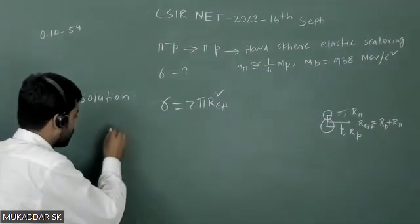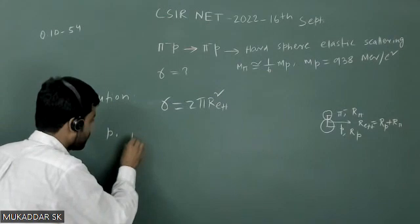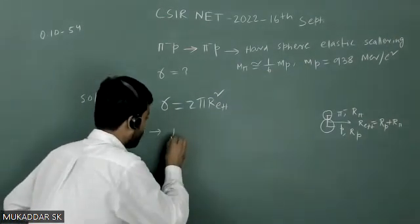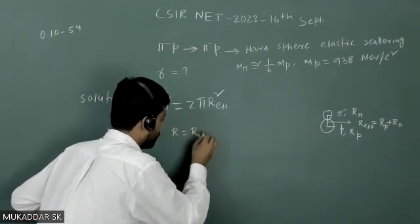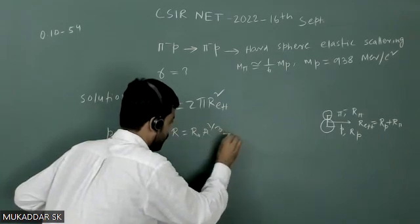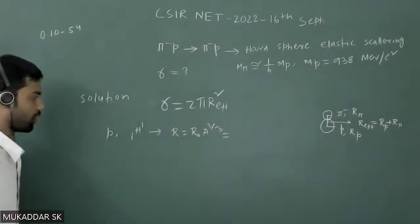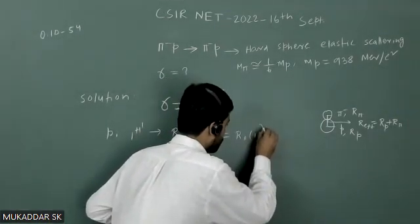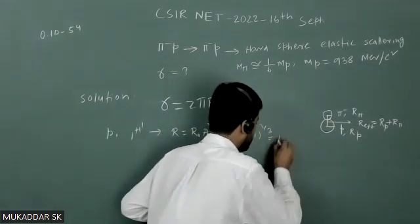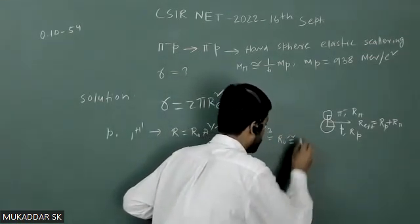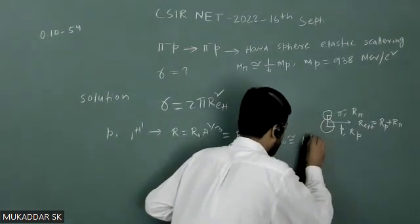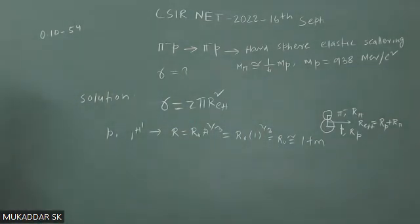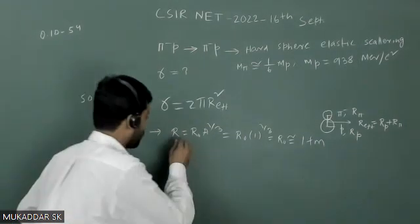Because proton is nothing but structure is like ¹H¹. So I can calculate this by using r equals to r₀A^(1/3). And A will be the mass number; for proton it will be 1. So it will be r₀ times 1^(1/3). So this will be nothing but r₀. And r₀ is basically of the order of 1 femtometer. So this is the radius of proton actually.